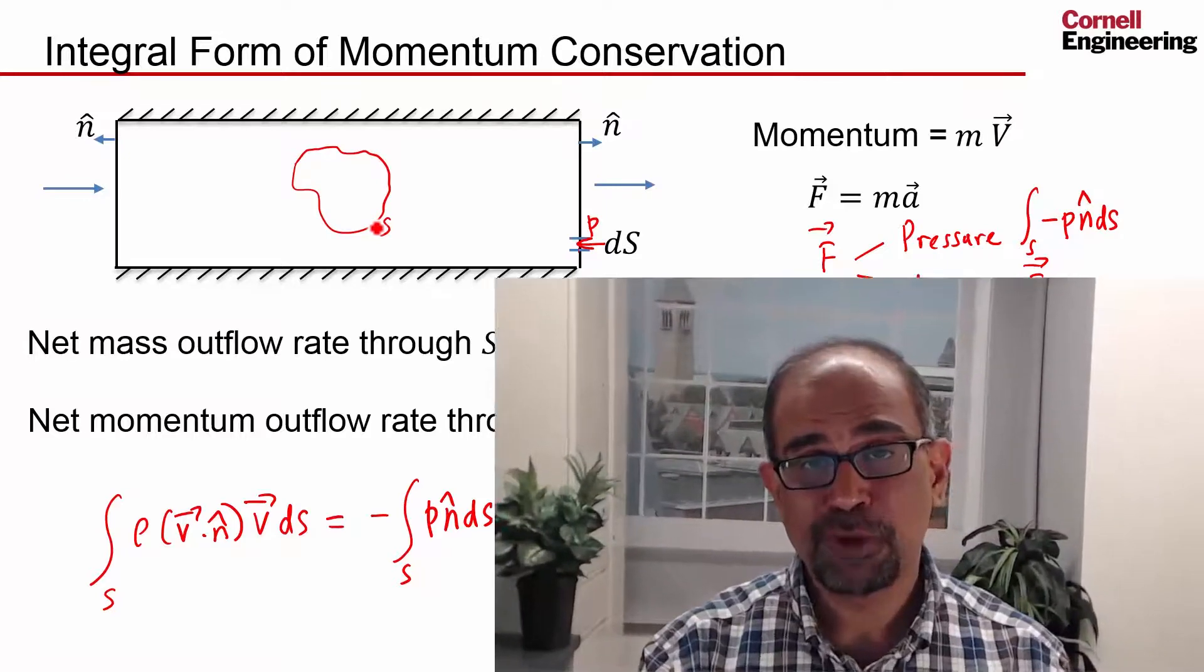This is the form of momentum conservation that is used by the Ansys Fluent solver. Now we have seen the equations that govern fluid flow and we need to add boundary conditions in and solve these equations using Ansys Fluent.